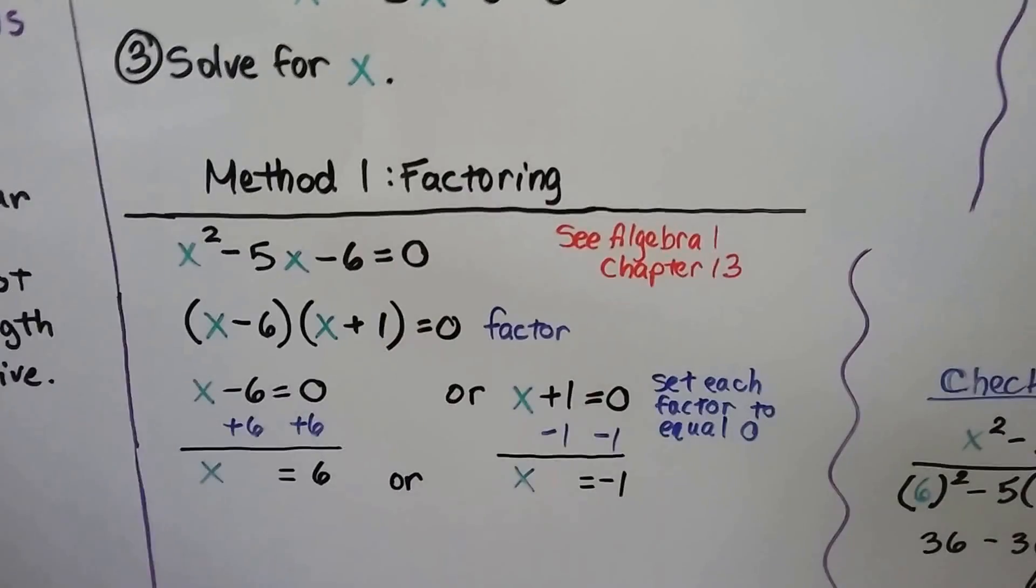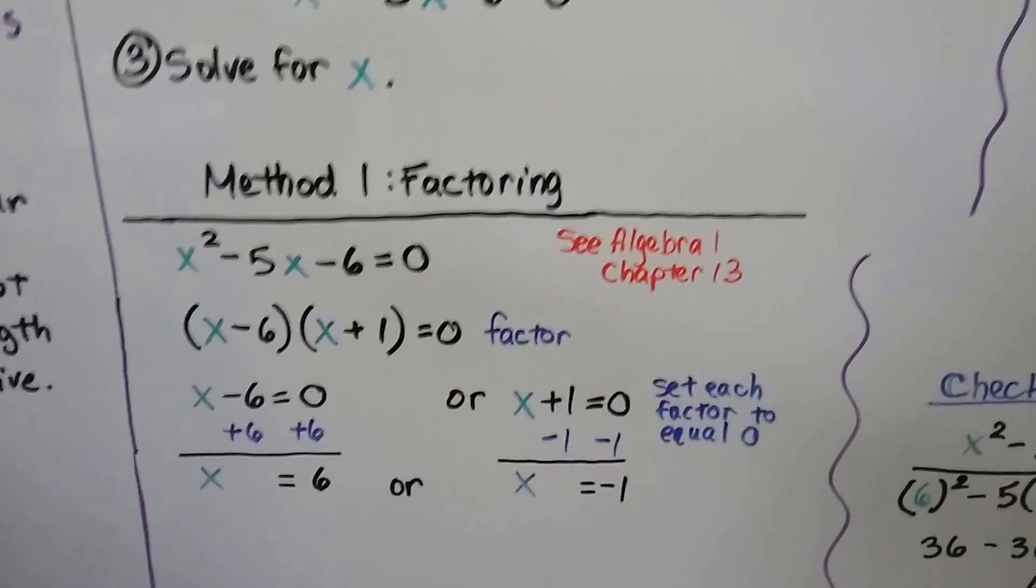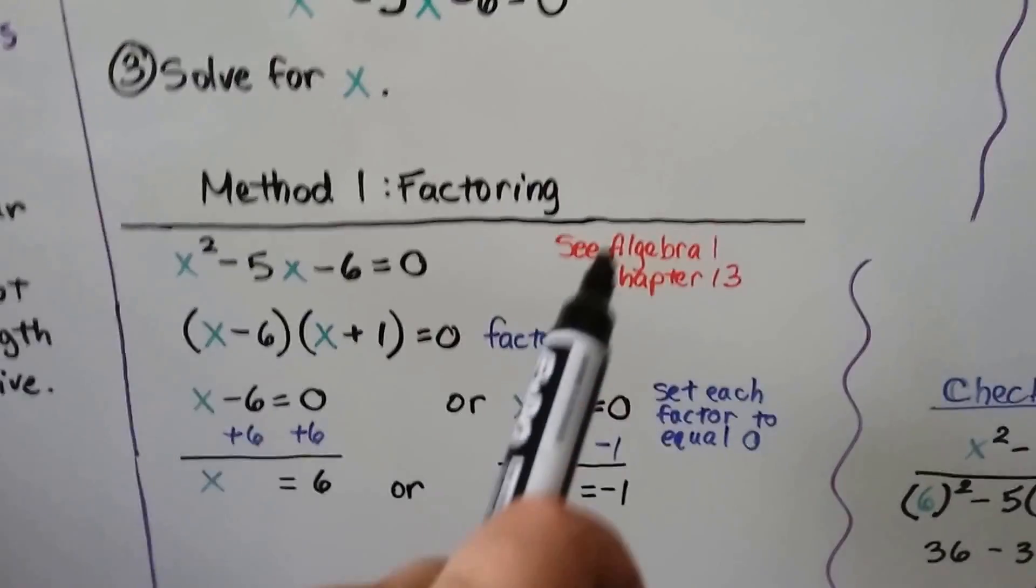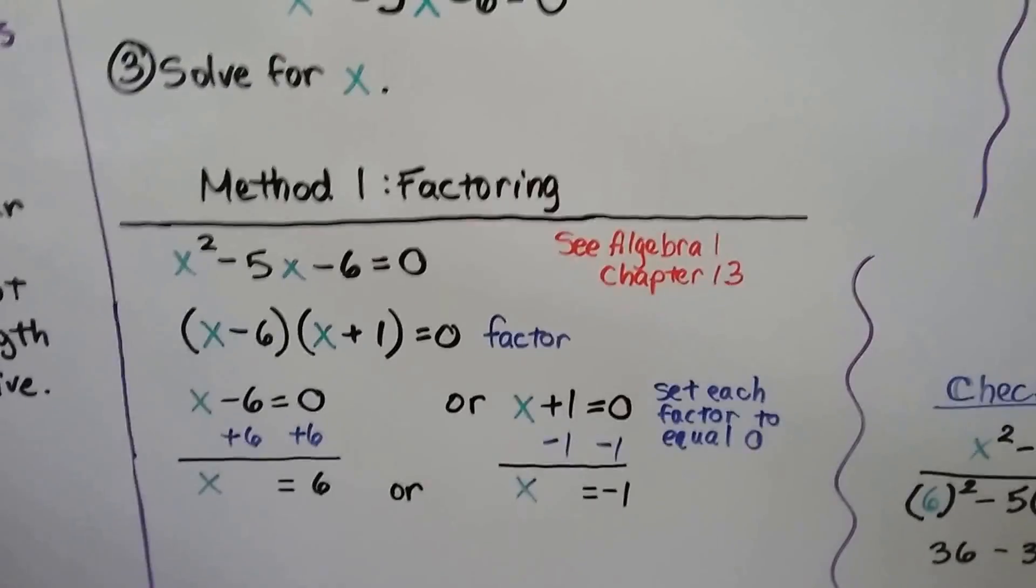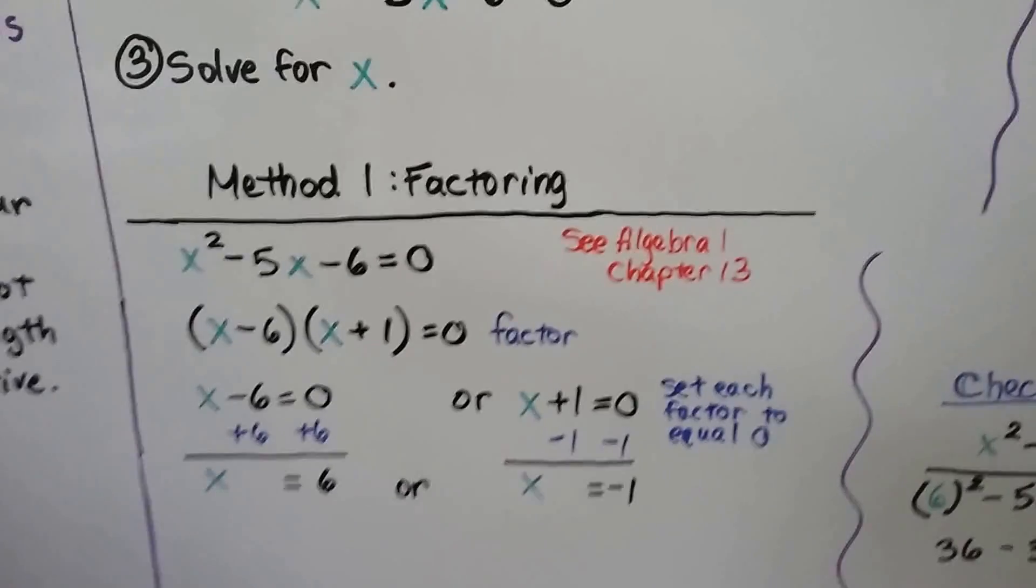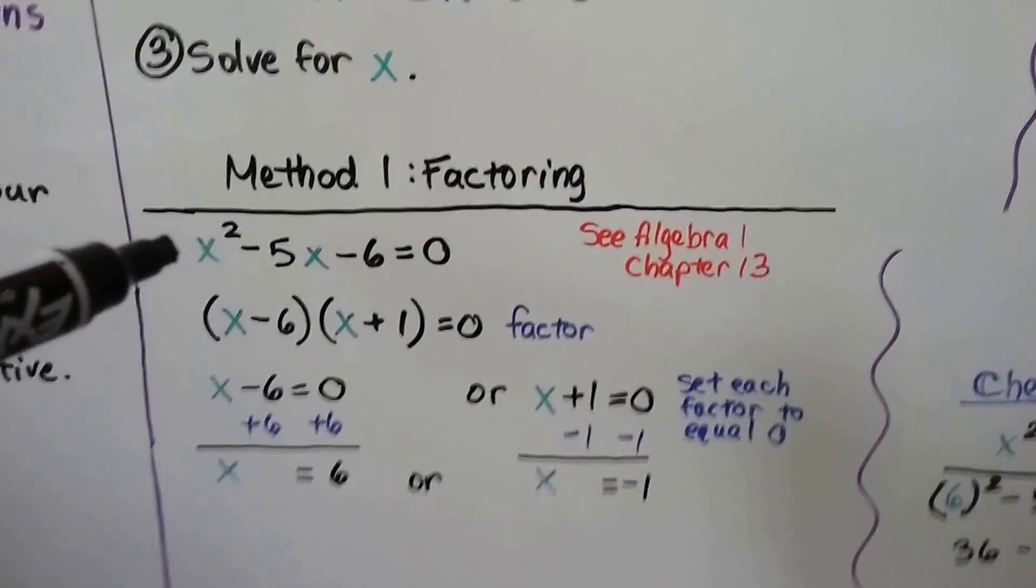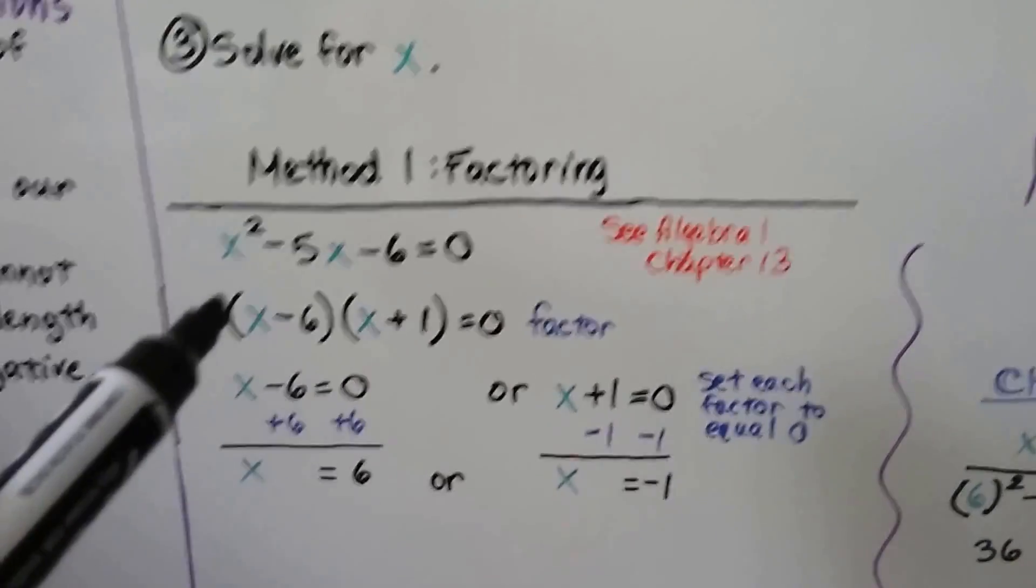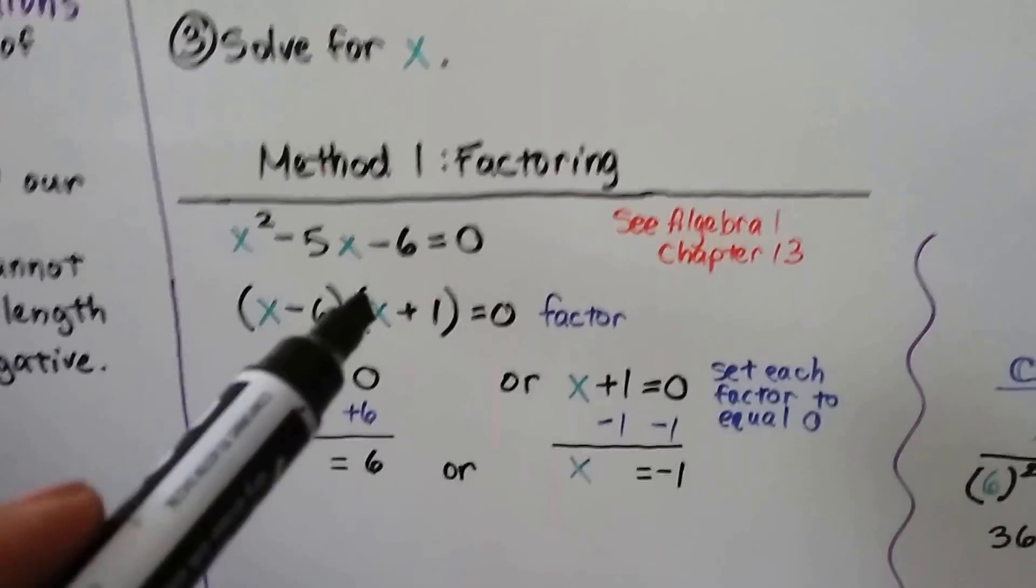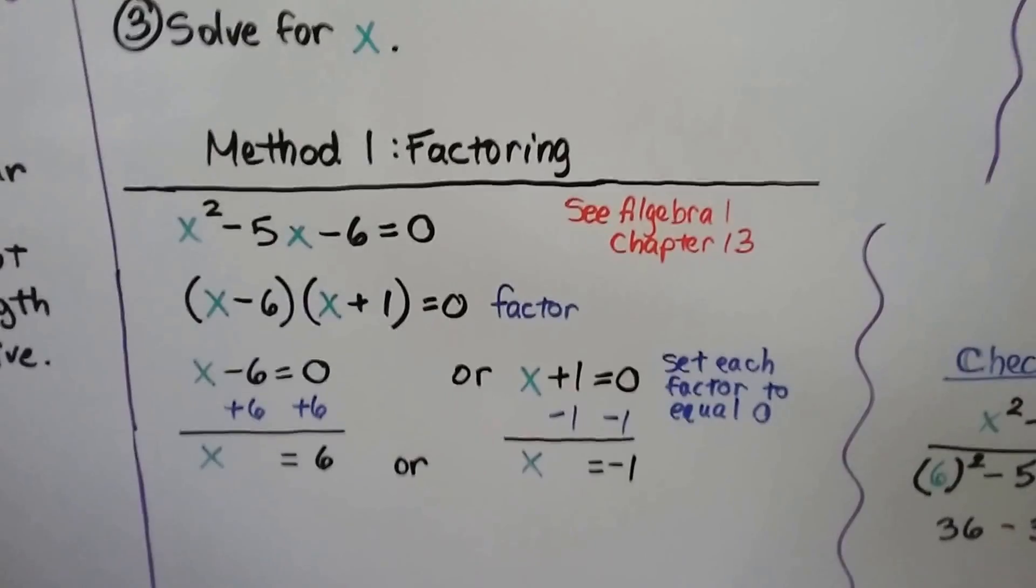The first method would be factoring. If you don't remember how to factor these, you can check the description for the link to Algebra 1, Chapter 13, and you can get a quick review. To factor this quadratic equation, we set it as (x - 6)(x + 1) = 0.